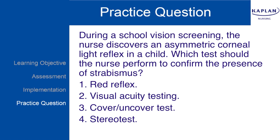The red reflex test is a test for anomalies of the cornea, the anterior chamber, lens, or retina. This is not directed at confirming the presence of strabismus.